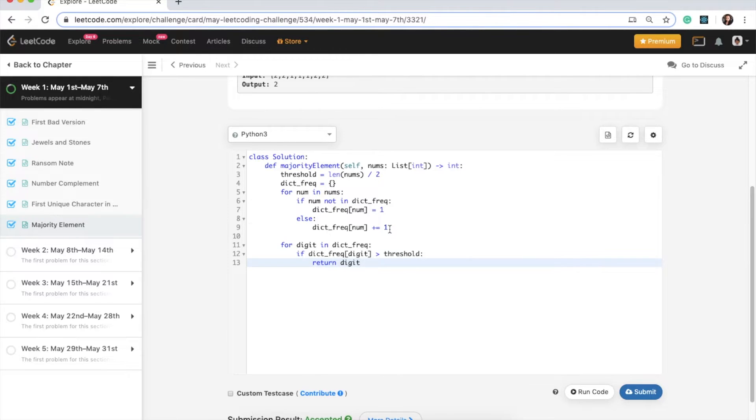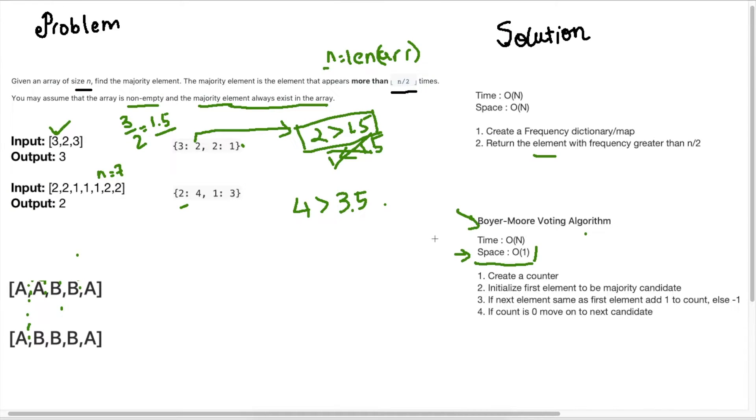Now, so instead of creating this additional space for this frequency dictionary, is there a way we can optimize this space by just using our nums array? So that is optimization we will look at next for this solution. Great. So the optimization that we are going to decide now is how to optimize the space for this algorithm, like can we solve this problem in constant space. And that's where Moore's voting algorithm comes in handy. And I will just walk through the high level idea of what this algorithm means first before looking at the code.